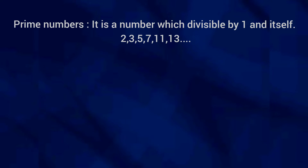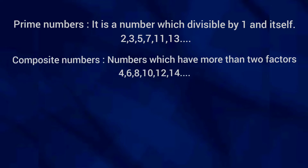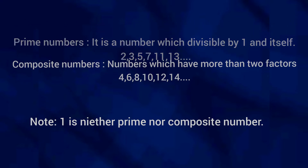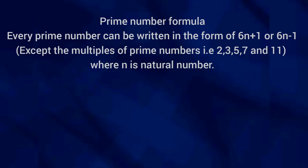Prime numbers are numbers which are divisible by one and themselves. Composite numbers are numbers which have more than two factors — for example, 4, 6, 8, 10, etc. Note that one is neither a prime nor a composite number.